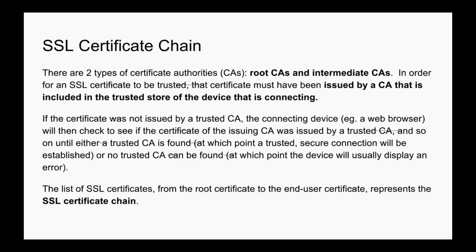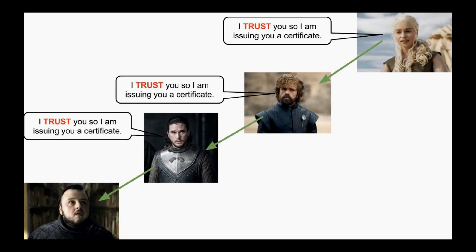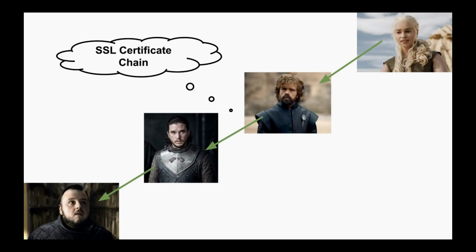This list of SSL certificates from the Root CA to the End User Certificate represents the SSL certificate chain. In our Game of Thrones example, Khaleesi was the Root CA, Tyrion and Jon Snow were the Intermediate CAs, and Sam Tarly has an End User Certificate. Each CA issues a certificate to the one below it — Khaleesi to Tyrion, Tyrion to Jon Snow, and Jon Snow to Sam Tarly. And this is what an SSL certificate chain is.